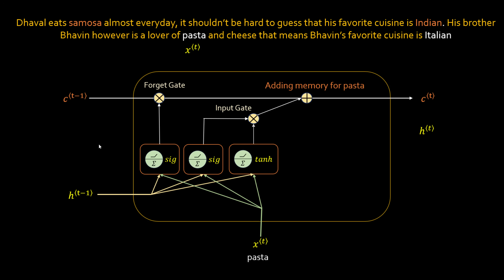There is another thing which is the input gate. When 'pasta' came, not only did you forget about 'samosa,' you need to add a memory of 'pasta.' The way it works is you use both sigmoid and tanh on these two vectors, which will have weights. The equation is: ht-1 times that weight plus xt times that weight plus bias, then you apply tanh on top of it. The same equation applies with sigmoid instead of tanh. You multiply both outputs and then add that as a memory for this word.